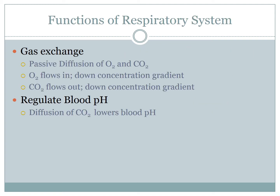We're going to start off with the functions of the respiratory system. The respiratory system really only has one main function, and that's gas exchange. The high concentration of carbon dioxide in the body flows out of the body down its concentration gradient, and the high concentration of oxygen outside the body flows into the body down its concentration gradient. This helps to maintain homeostasis.